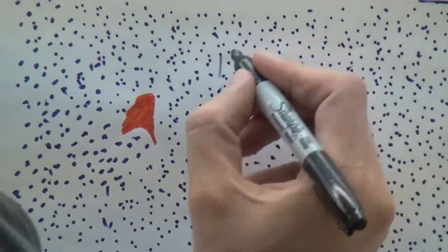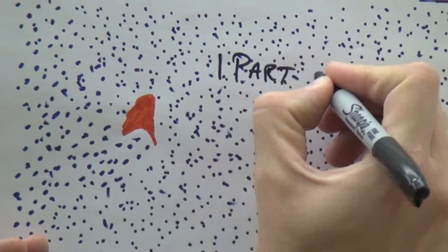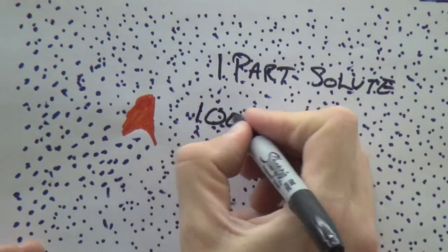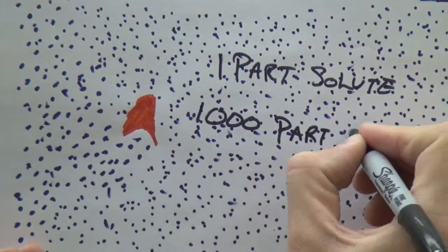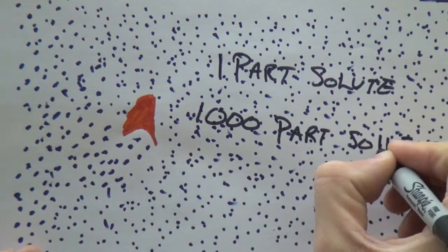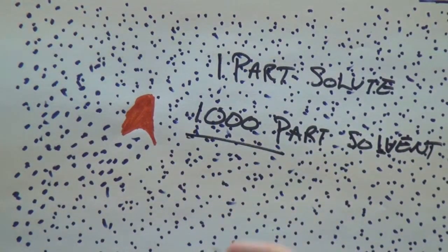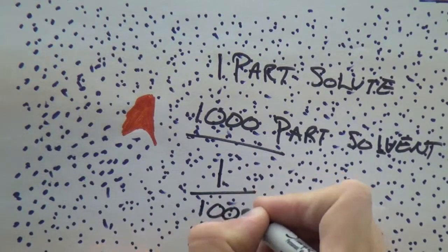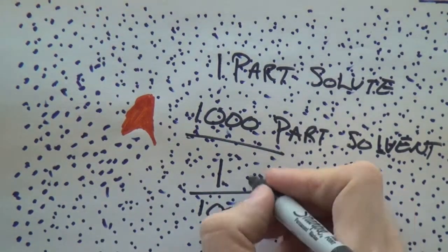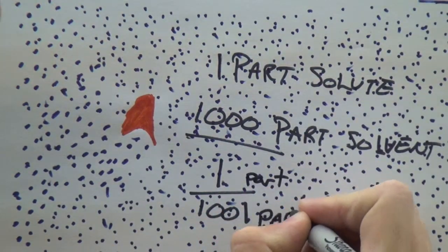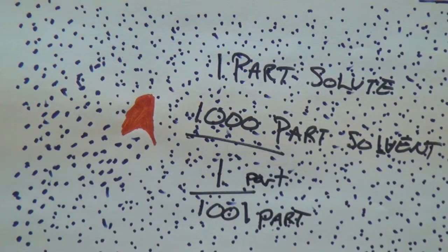So we need to find the concentration. So in this drawing we have one part solute, and then we have a thousand parts of solvent. We add those bad boys together, and we get the solution. So we have one part solute, and a thousand and one parts of solution.